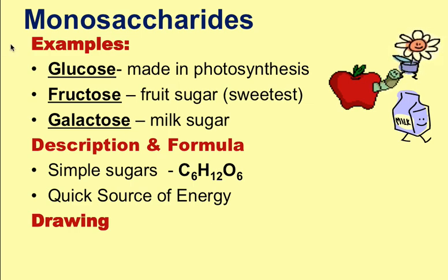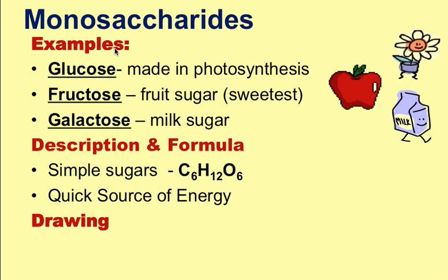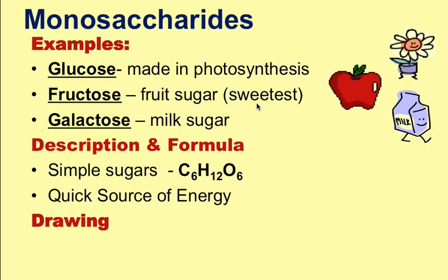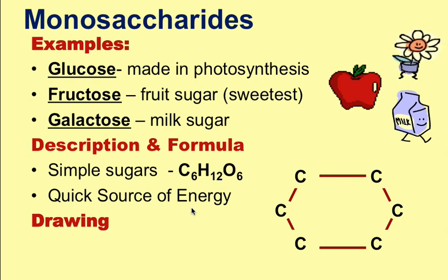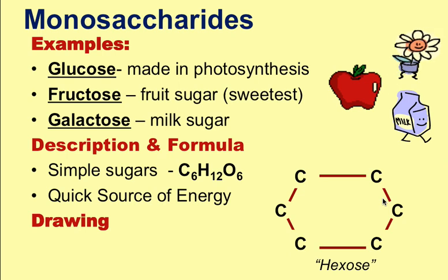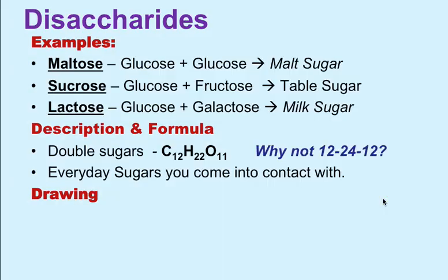There are three different types of carbohydrates. The first are monosaccharides — mono means one, saccharide means sugar, so these are one sugar. The three examples are fructose, glucose, and galactose. Glucose is made during photosynthesis and is found floating in your bloodstream. Fructose is found in fruits — the very sweet sugar. Galactose is part of milk. These are simple sugars with the formula C6H12O6, used as a quick energy source. Their structure is a hexagon with six carbons — a hexose sugar, because it has six sides and six carbons.